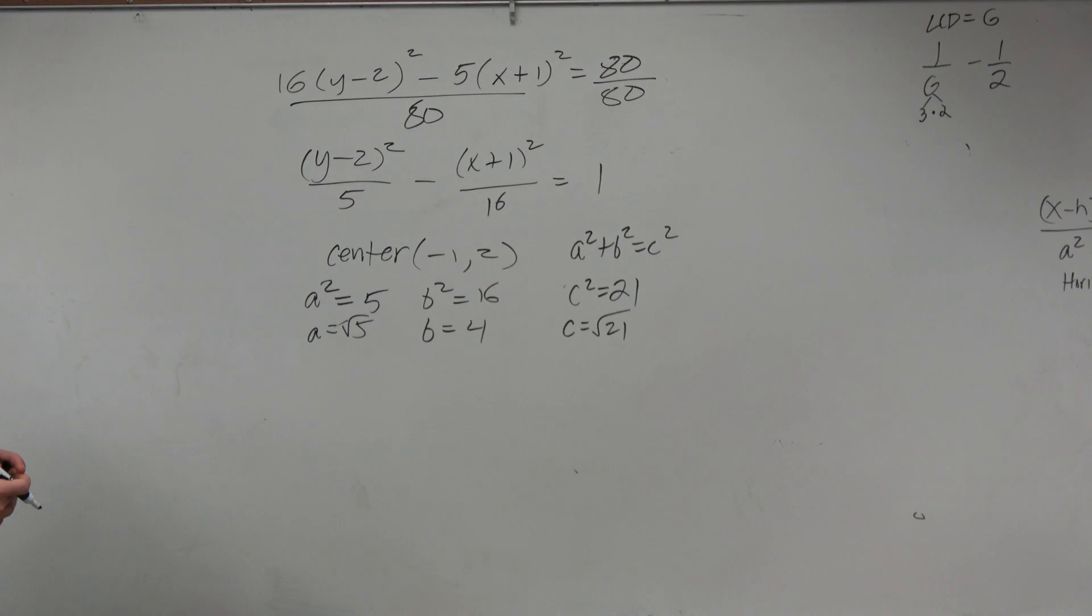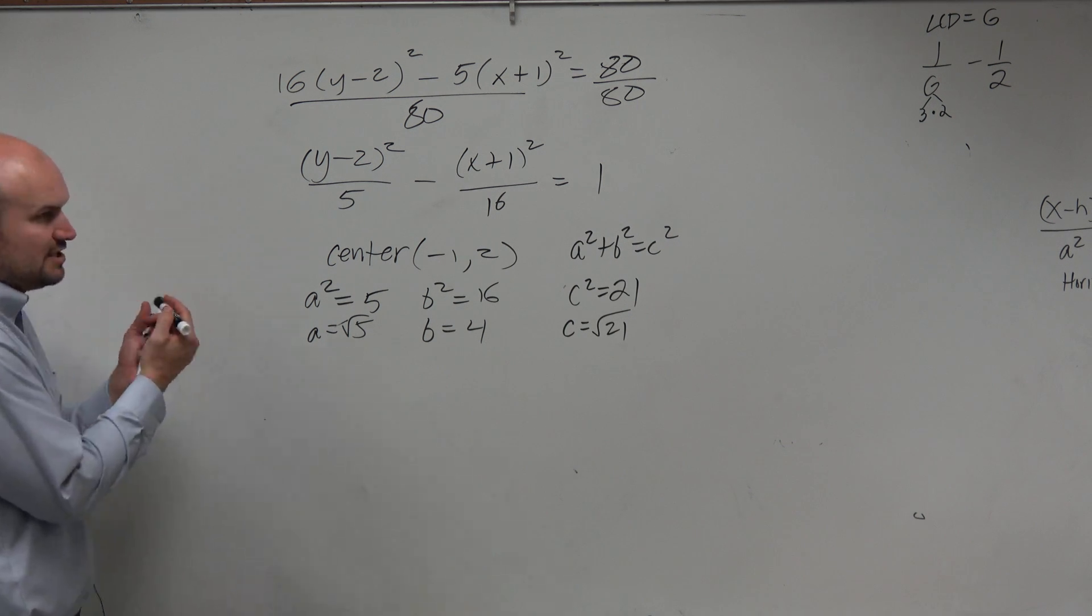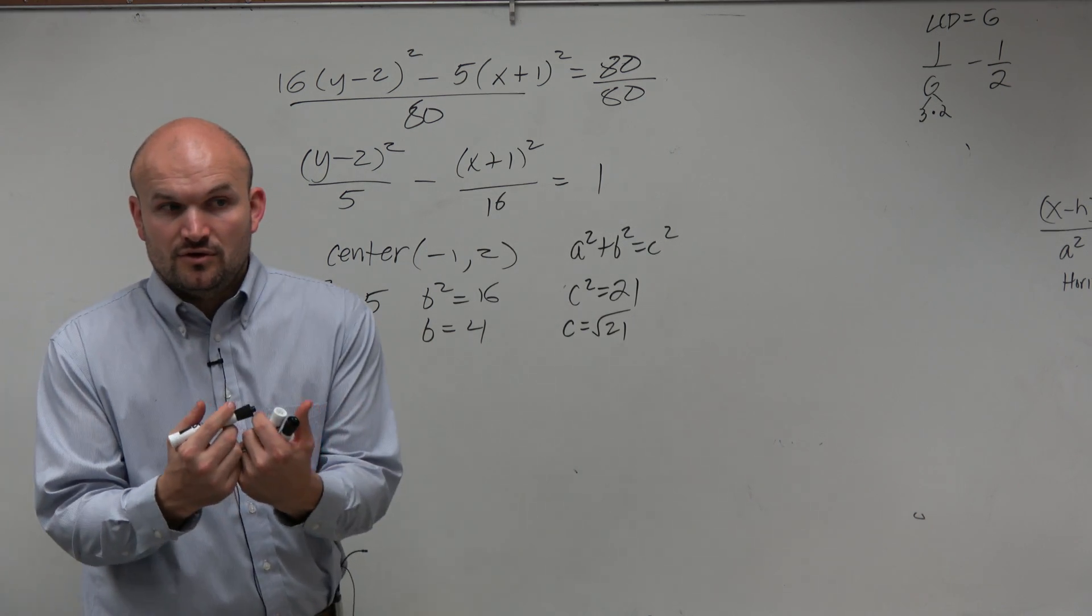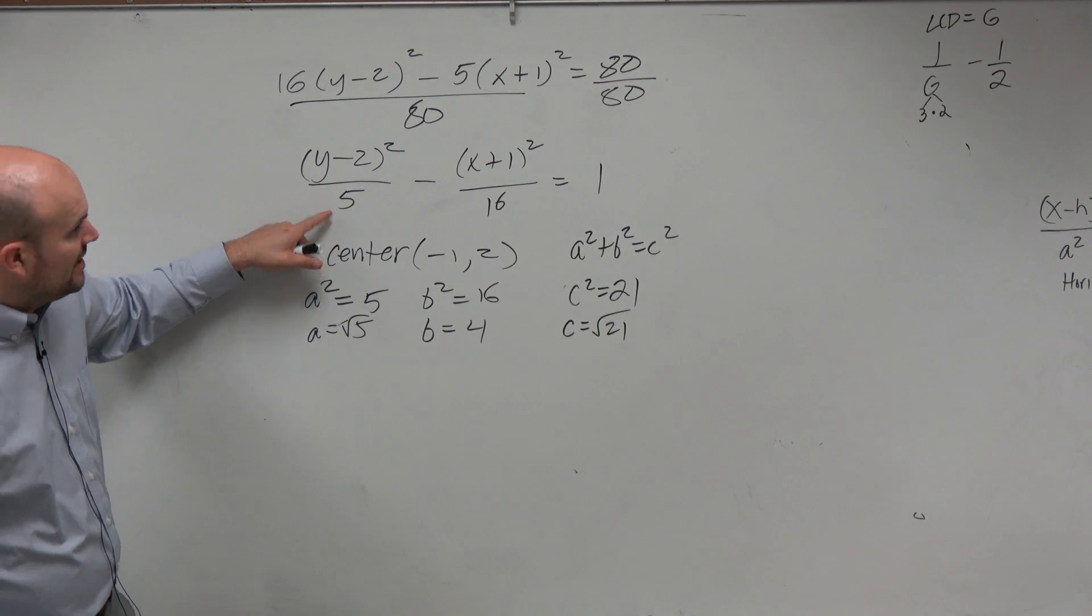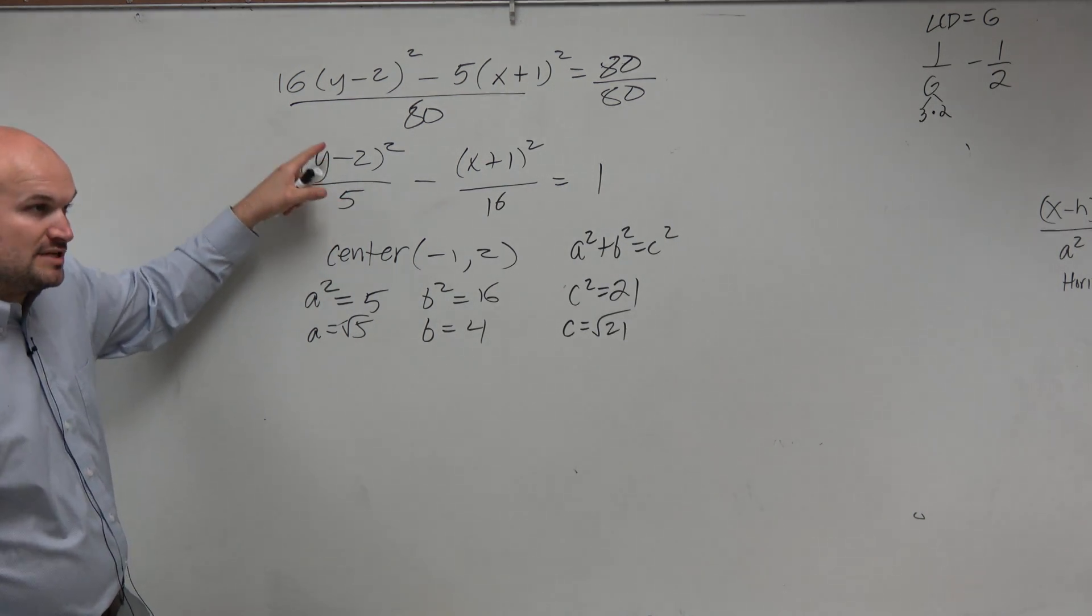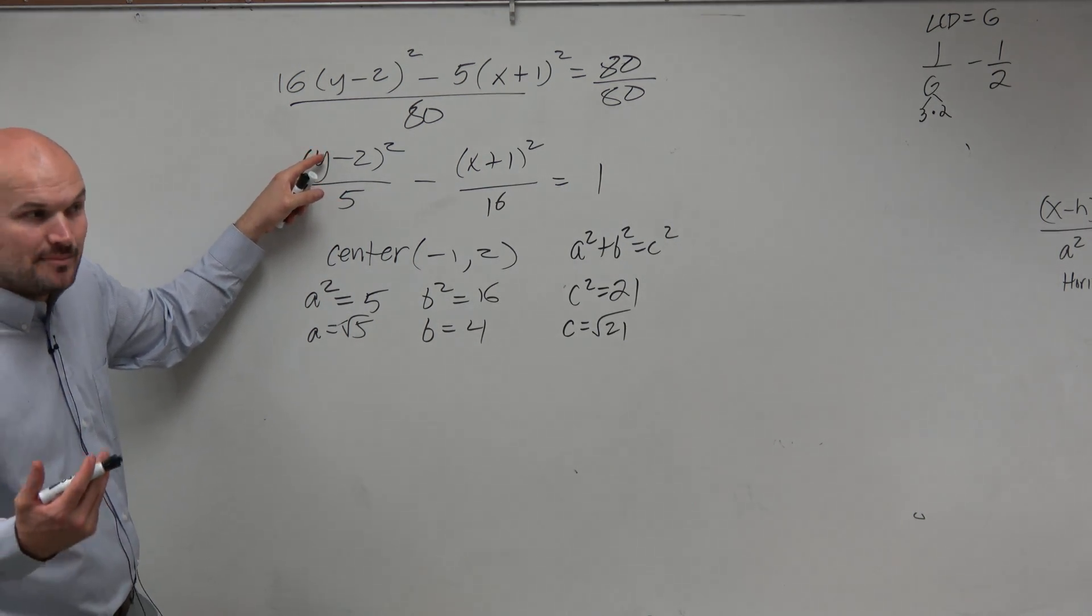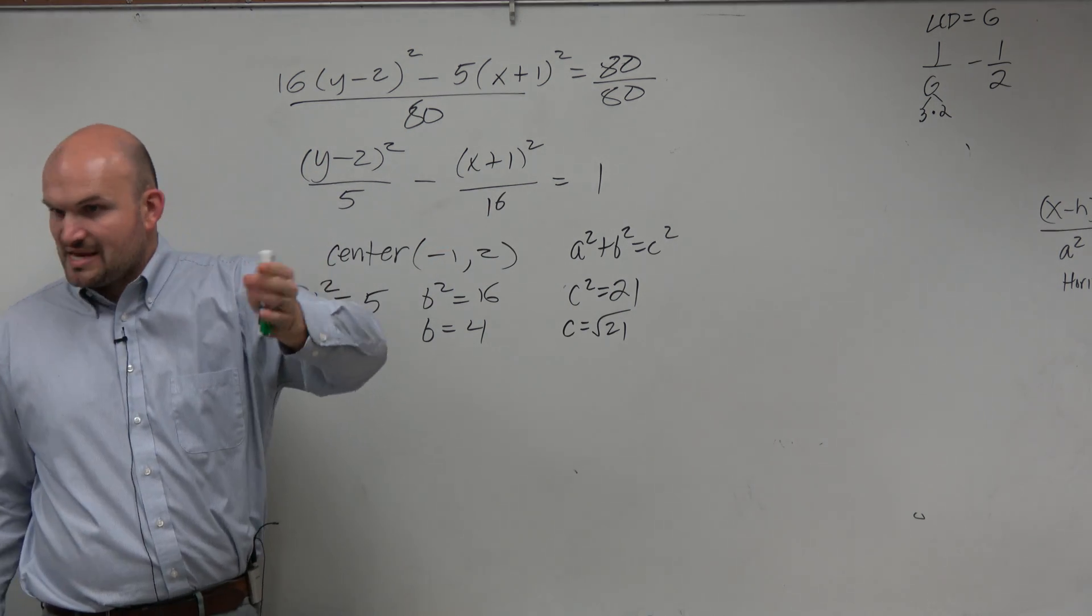So remember, if we need to find the vertices, that is going to be a value of a from the center. Now, we've got to identify where is our transverse axis. Is our transverse axis vertical or horizontal? Horizontal. Vertical because a² is under the y, right?